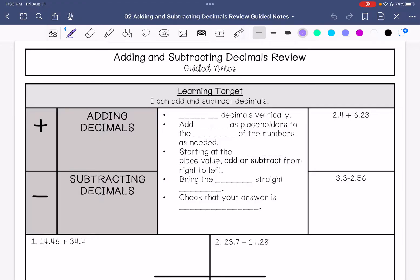So our steps for doing this is to line up the decimals vertically, add zeros as placeholders if needed. And this is going to be zeros as placeholders to the right of the number. Then starting at the lowest place value, you are either going to add or subtract from right to left.